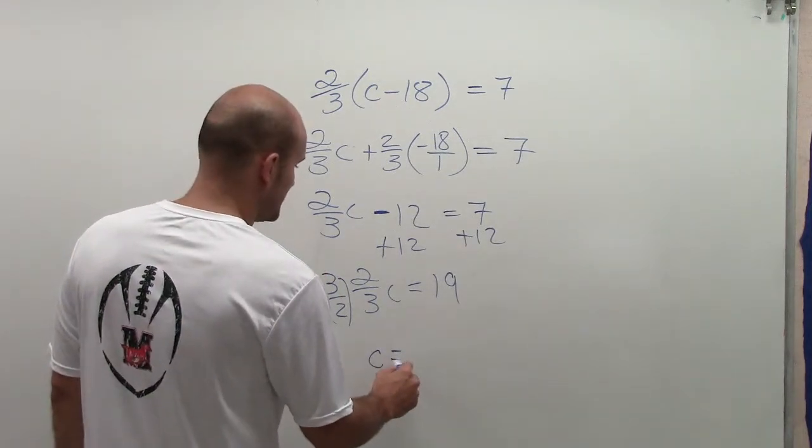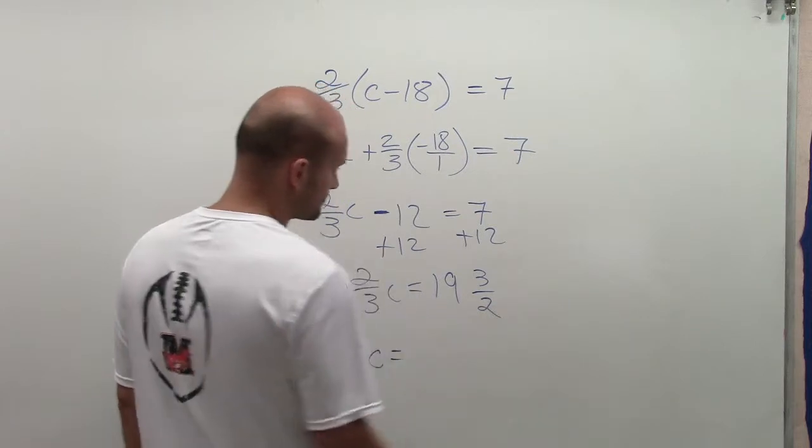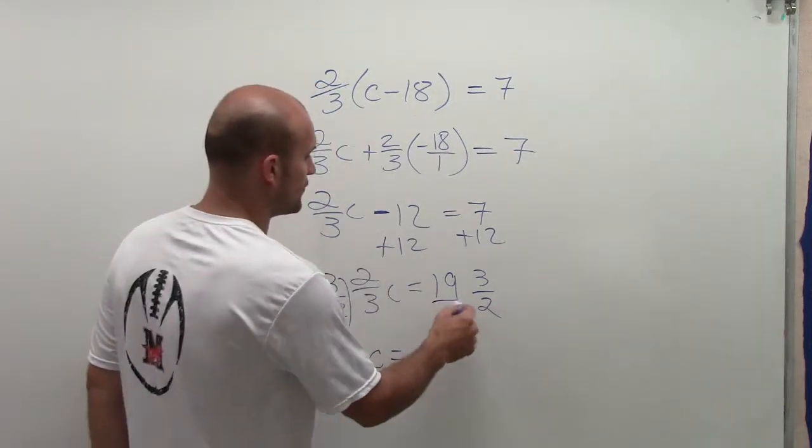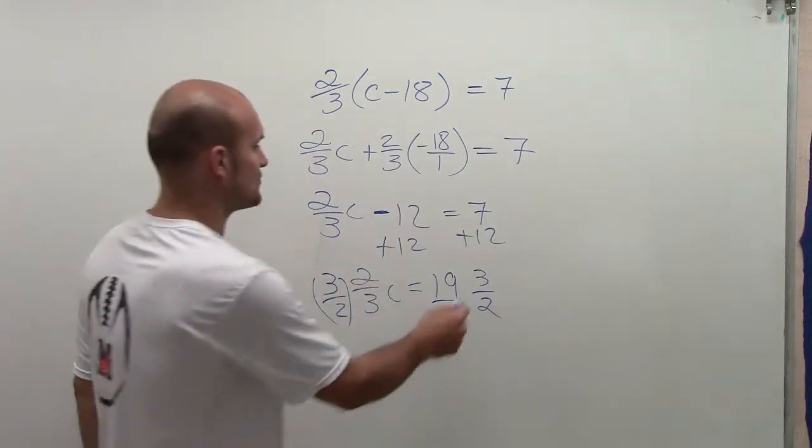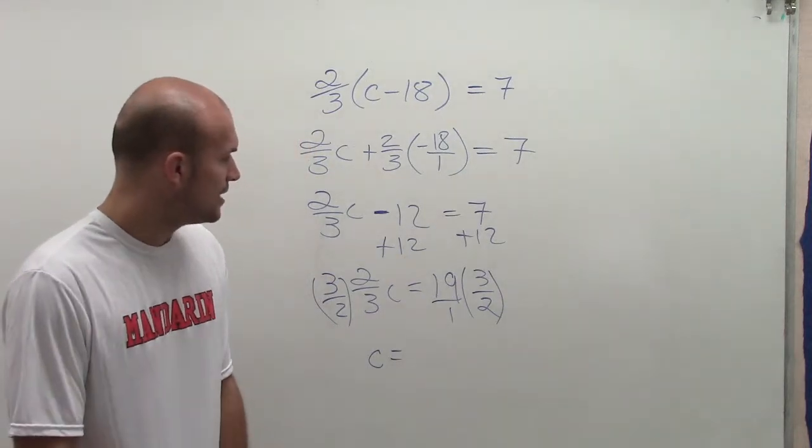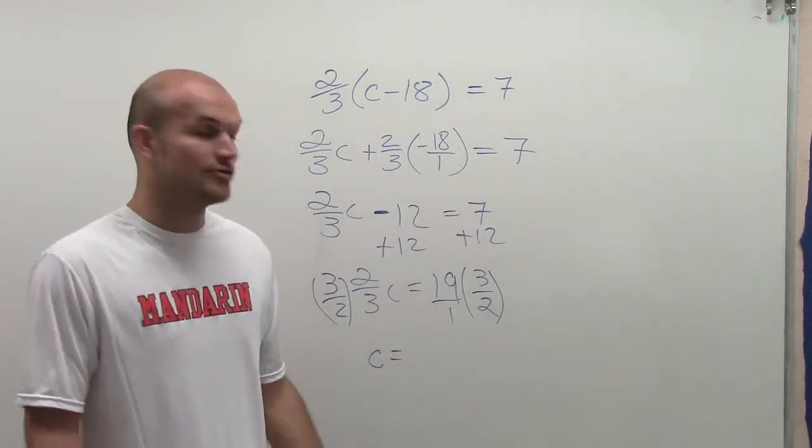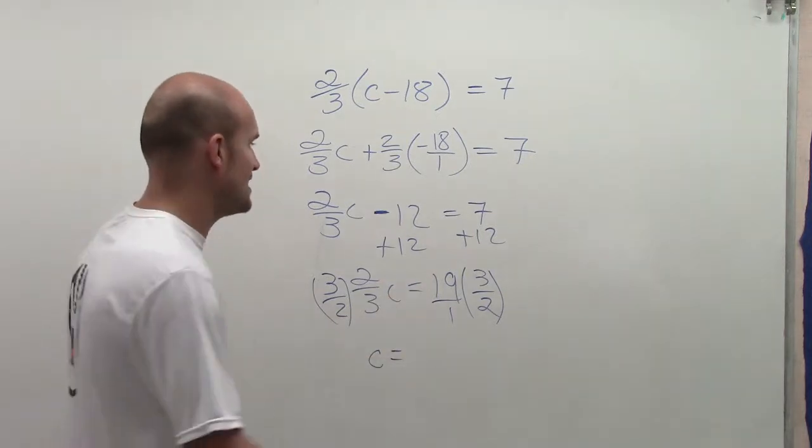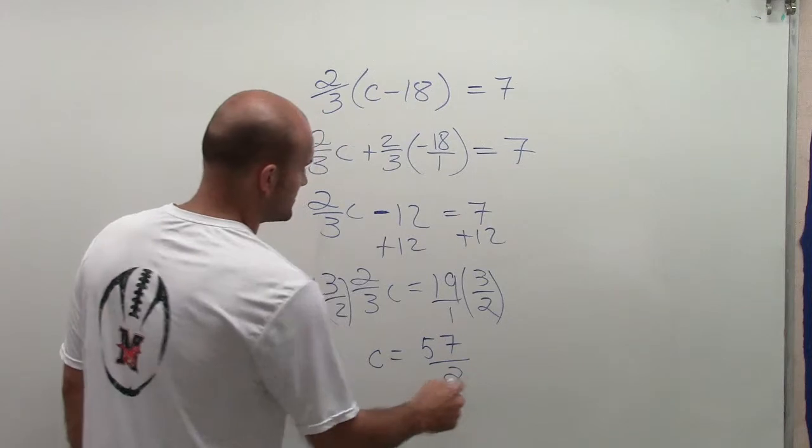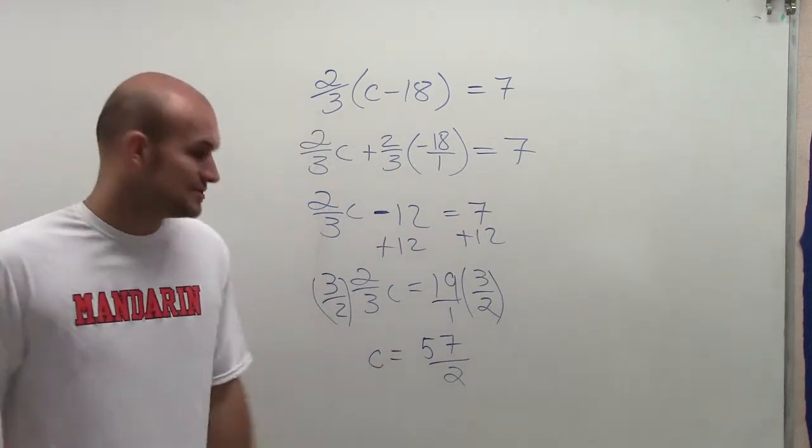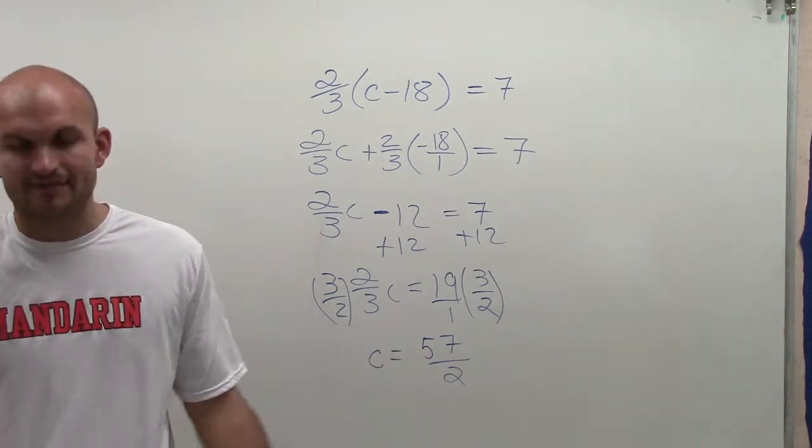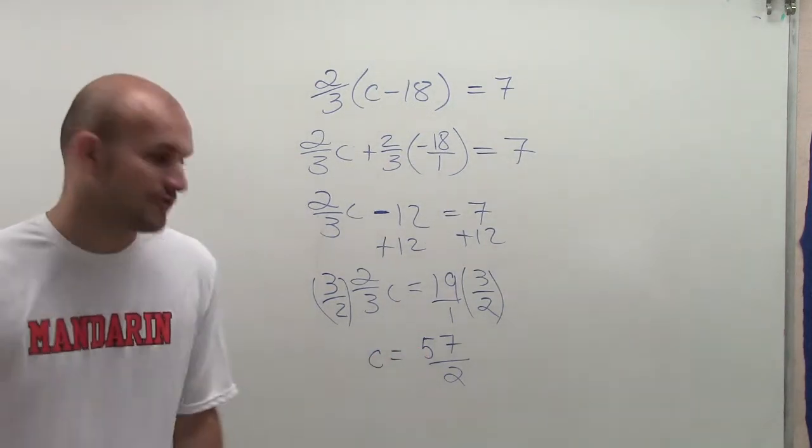Make sure you multiply on both sides. So you have c equals 19 over 1 times 3/2. 19 times 2 is 38, and then you add it one more time, it's 57, divided by 2. You can see that's not going to leave you an even number, so I just leave it as a fractional form.